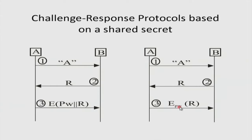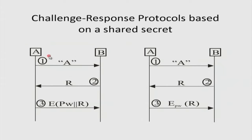The key is not exactly the password but a function of the password — a predetermined function that both sides know. Use that function on the password as a key to encrypt the nonce. Only she could have responded correctly because the response involves encryption with a key that only she and he share. This protocol is one-way authentication with a long-term shared secret — both sides know A's password.